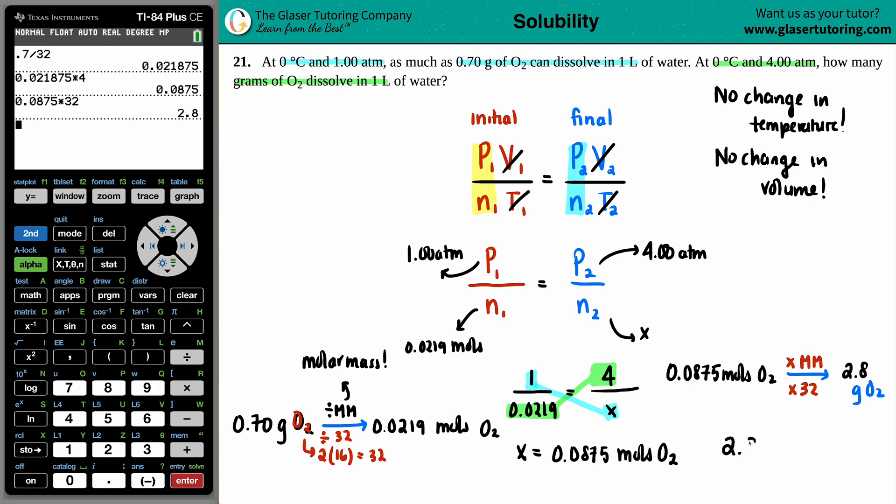So 2.8 grams of O2. Oh yeah. There you go. What'd you think? I hope this helped. Let me know in the comments.